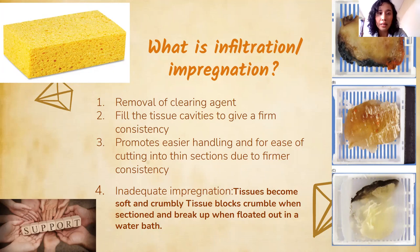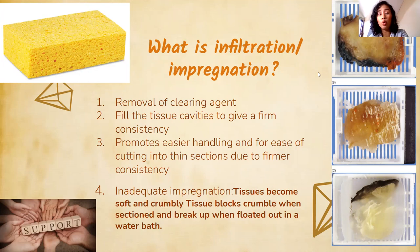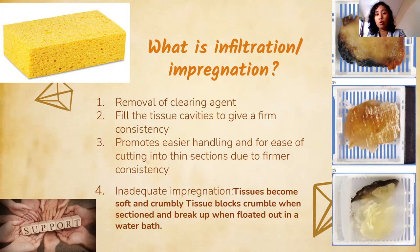What happens when you inadequately impregnate? The clearing agent is not removed, the tissue is soft and crumbly — like cookies falling apart. Tissue blocks crumble when sectioned and break up when floated in the water bath. If impregnation is not done properly, the tissue crumbles, is difficult to cut, and is easily damaged. Once infiltrated with paraffin wax, the tissue becomes firmer. After embedding, it becomes a tissue block.